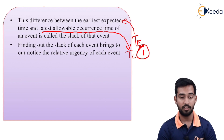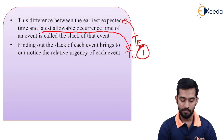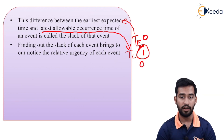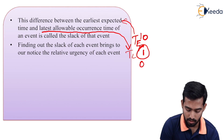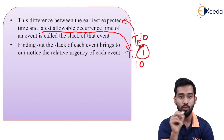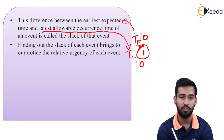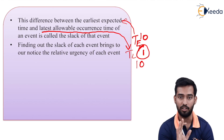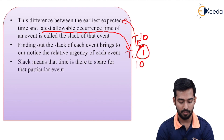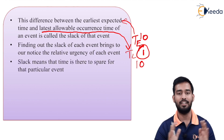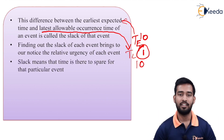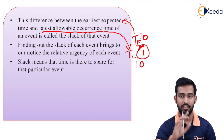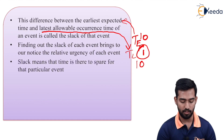Finding out the slack of each event helps you notice the relative urgency of that event. If the difference is zero — for example, Te is 10 and TL is also 10 — it means there is zero slack present. We have to start that particular event at the given time only; there is no slack available and we can't delay that particular activity. Slack means there is time to spare for that particular event. A positive slack means we have time, so we can delay that activity and relax the resources there. But if slack is zero, we can't delay that particular activity.